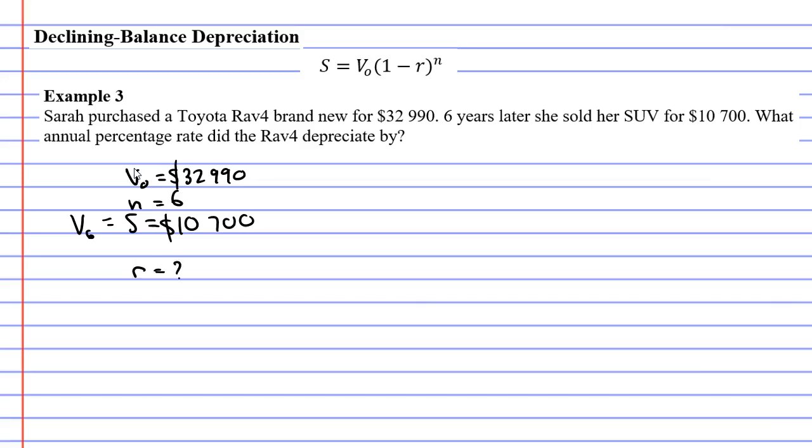So this one's going to be quite a tricky question. Anyway, we'll start by substituting into the equation. So our salvage value was $10,700. V₀ is $32,990. We don't know what R is, but we know that N is 6.